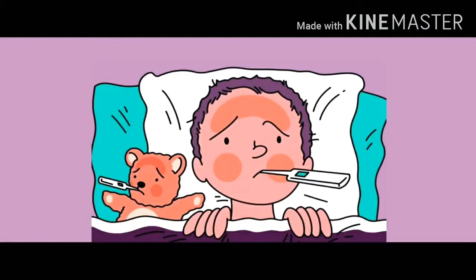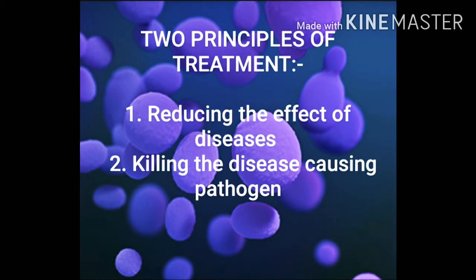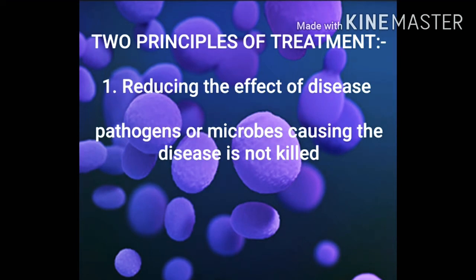If you have ever become diseased, then what are the steps which are being taken by your family? What are the steps for your treatment? This treatment comes under two principles. This treatment can be of two ways. The first principle is to reduce the effect of disease. In this type of treatment, the disease-causing pathogens are not killed.